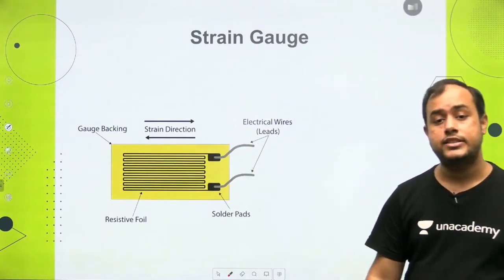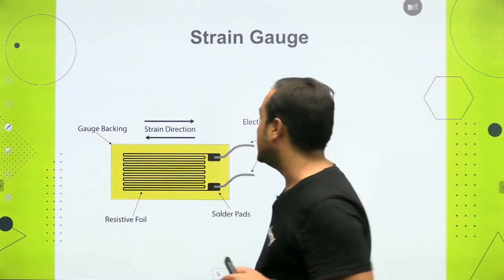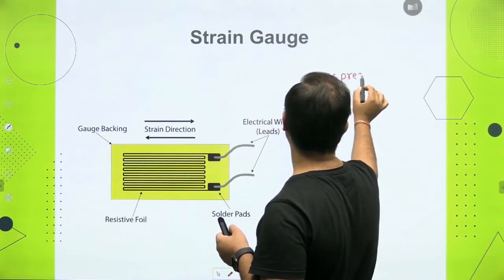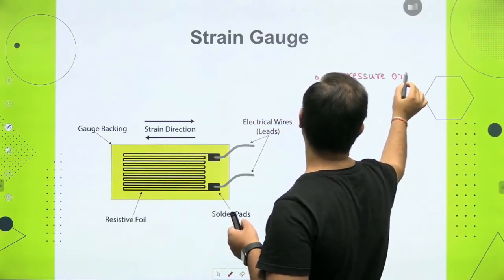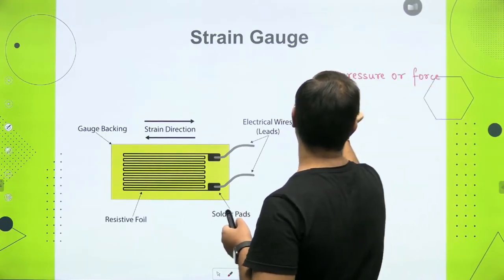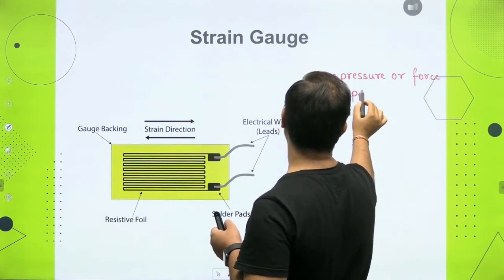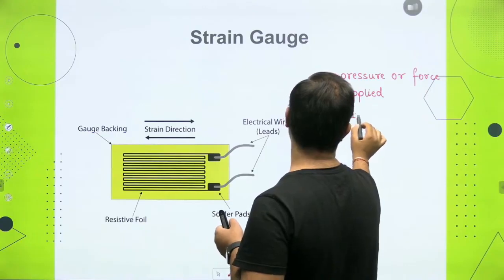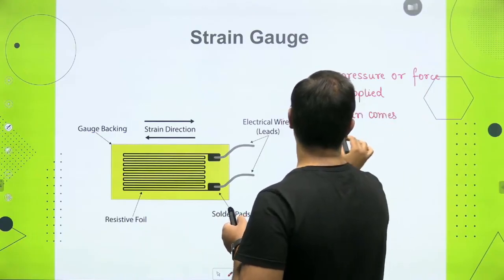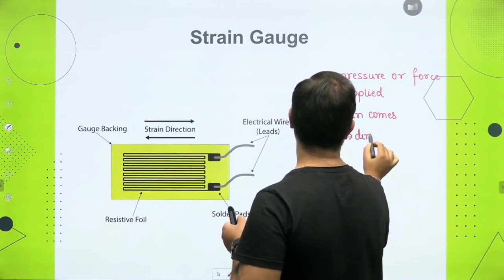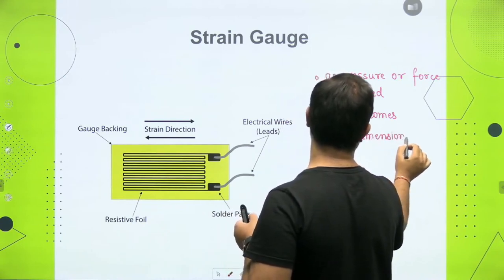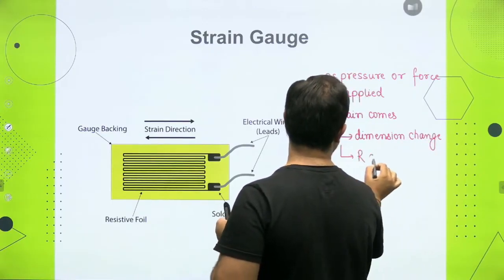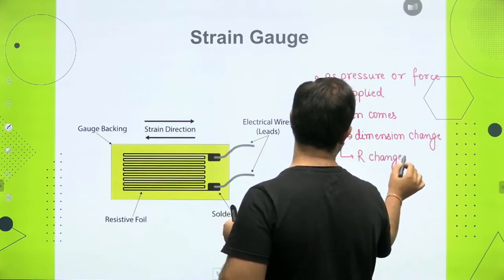The digital weighing machine is based on a strain gauge. What does a strain gauge do? As you put pressure or force on it, deformation occurs. Deformation means its dimension changes, so strain comes — strain meaning a change in dimension. And when the dimension changes, the resistance also changes. So here, dimension changes, which means resistance changes.